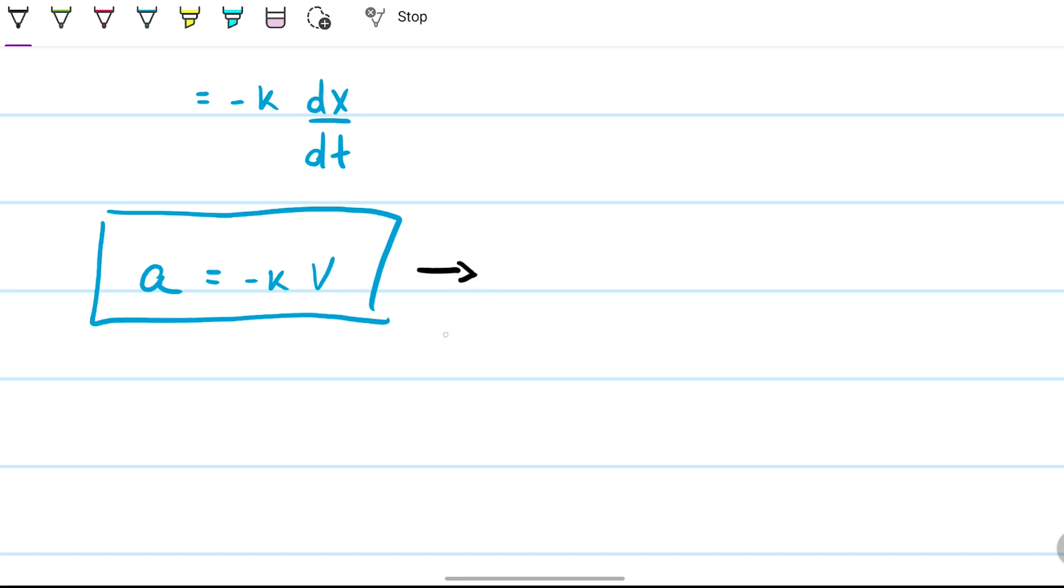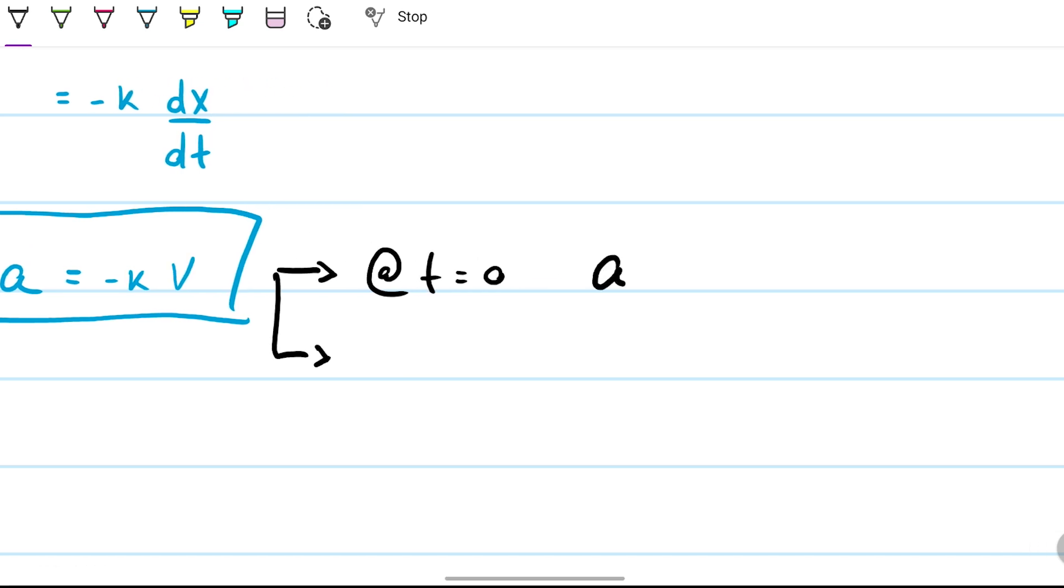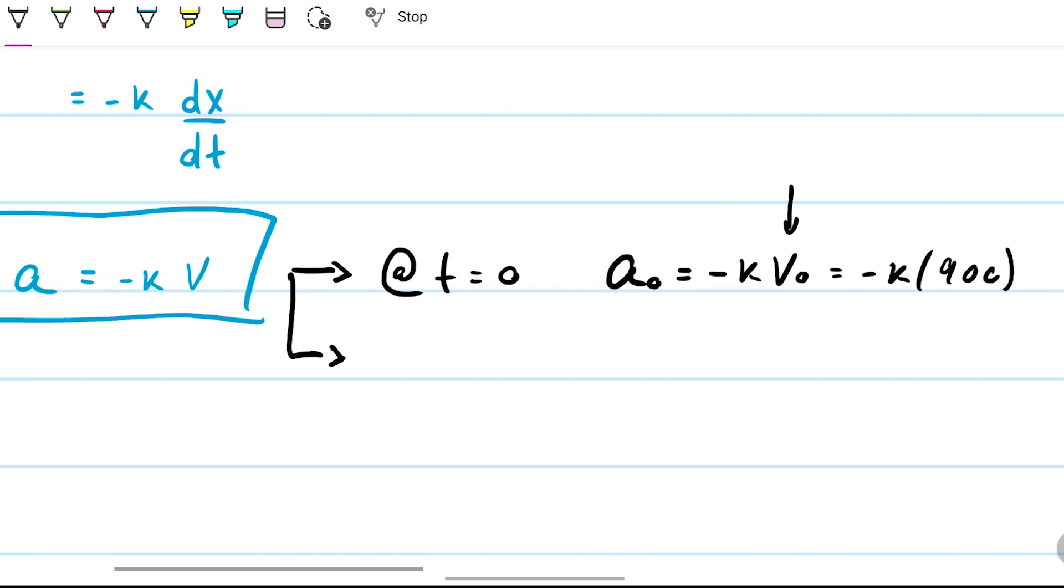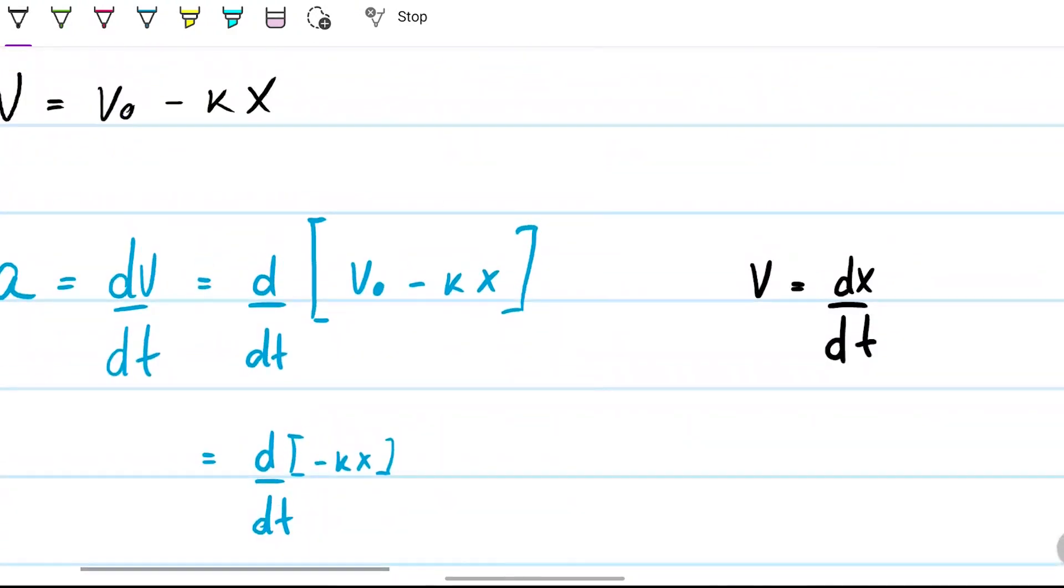Check out what I'm going to do. At t equals zero, the acceleration is a₀ and this is going to be minus k times v₀, and v₀ I happen to know is 900. So this is the same thing as minus k times 900. The other thing I know is that at position equals a third, velocity is zero. So therefore if you recall the original equation, zero equals 900 minus k times 1/3.